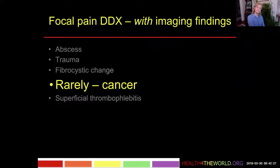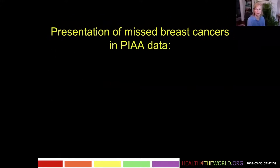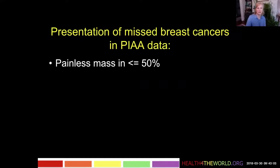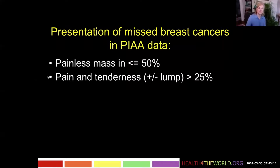We've talked about three conditions causing focal pain: abscess, trauma, and fibrocystic change. Rarely it's going to be cancer. The PIAA — the Physician Insurers Association of America — tracks malpractice cases and medical legal issues. In their data of missed breast cancers, a painless mass was the presenting symptom in almost 50% of patients, but patients who presented with pain and tenderness with or without a lump accounted for over 25% — perhaps more often than you would think.